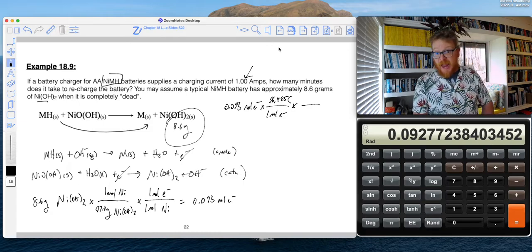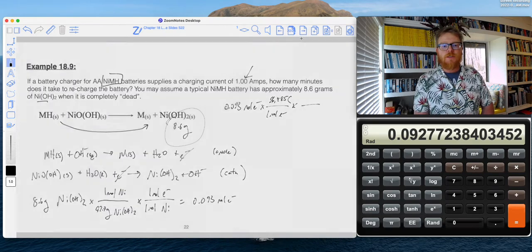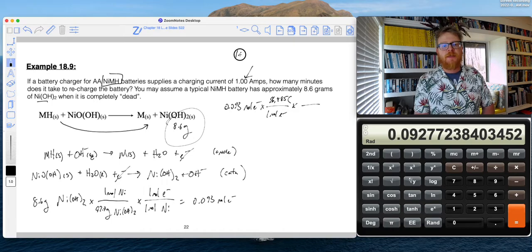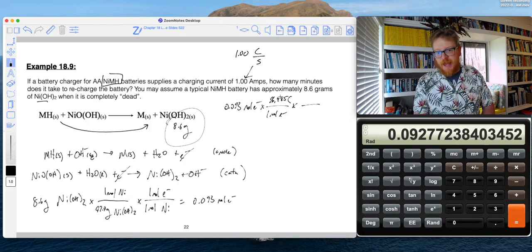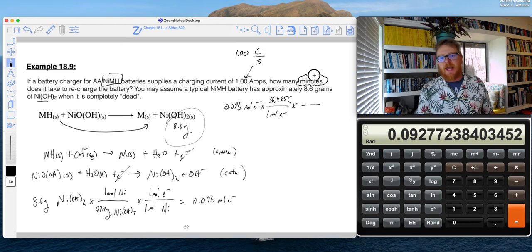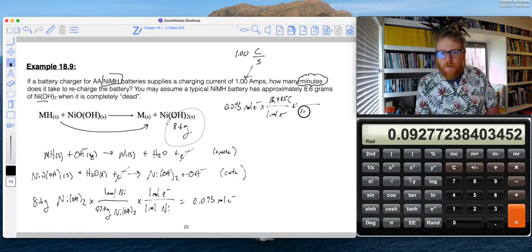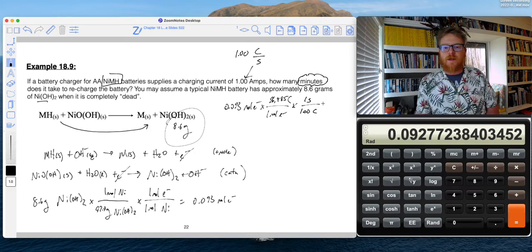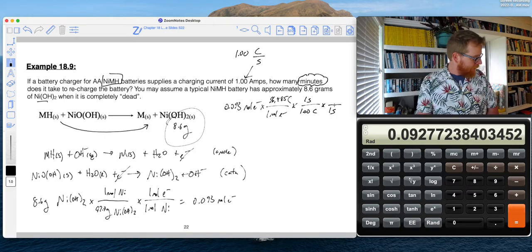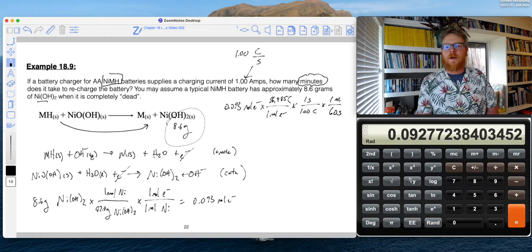And then now what do we do from here? Well, I'll remind you an amp, so that's why I went over those units. One amp is one coulomb per second. So if we have 1.00 amps, that is the same thing as 1.00 coulombs per second. And so now in my stoichiometry I've got to flip that number because I want to convert seconds into minutes because the question asked me how many minutes does it take to charge the battery. So now that's going to go 1.00 coulombs in one second. And in one second, 60 seconds in one minute.